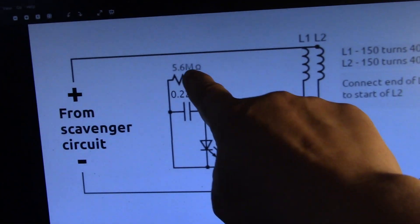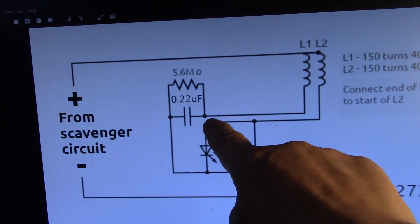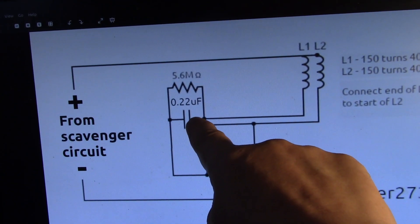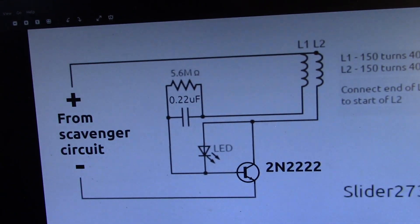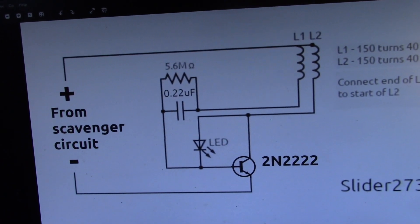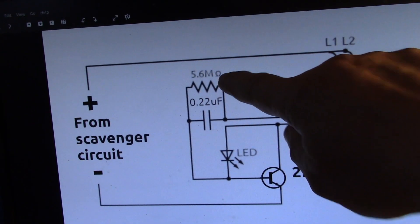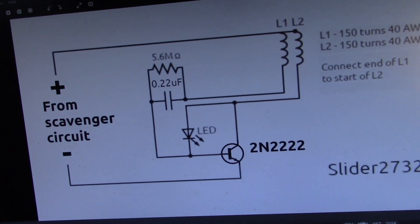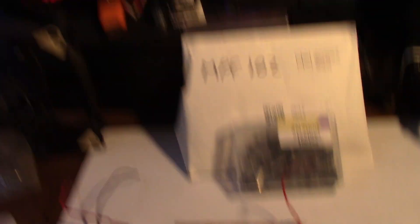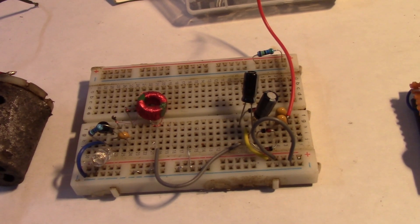So we've kept the 5.6 meg resistor, keeping the 0.22UF ceramic capacitor, but it's just a regular standard blocking oscillator really, albeit we've got the 5.6 megs which is quite a large resistor. Anyway, point being, that circuit actually did start and run.